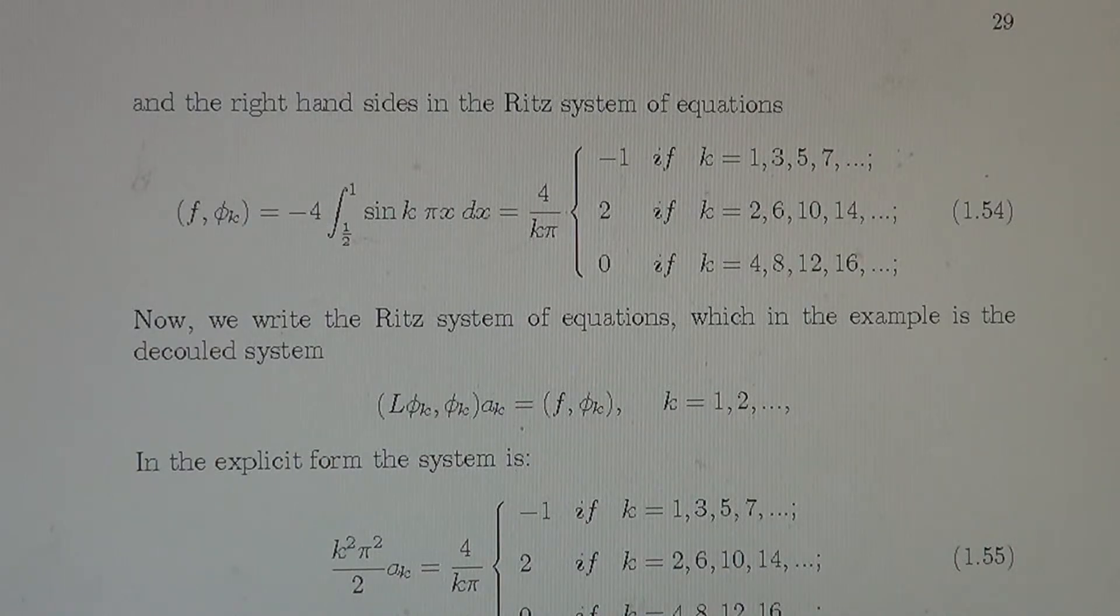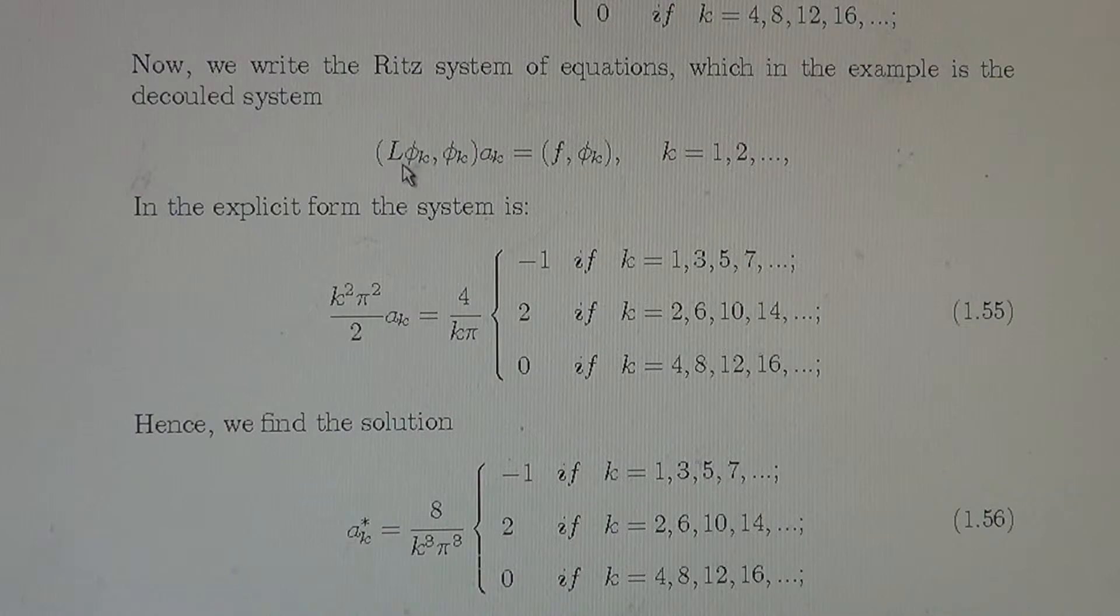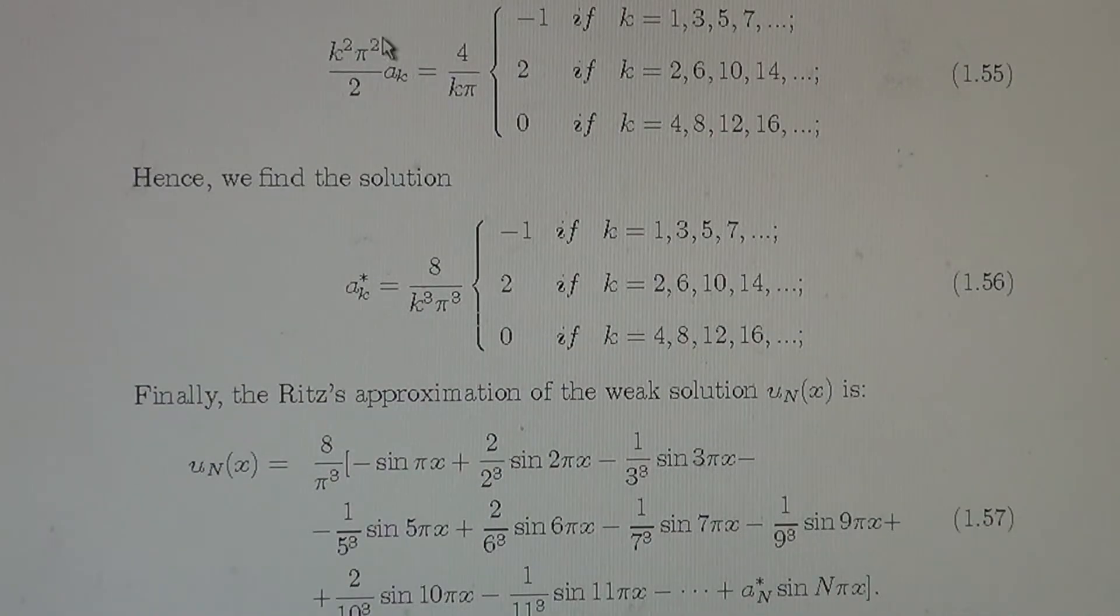Now we write the Ritz system of equations, which in the example is the decoupled system with the diagonal matrix. So that is L phi k phi k A k equals F phi k for all the k. If we write explicit form, we have, instead of this coefficient, we have here A k, and instead of that product, we are here. And then divided by this coefficient, we come to the solution, which we see in the formula,